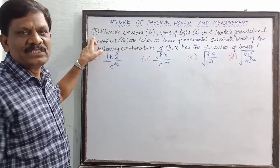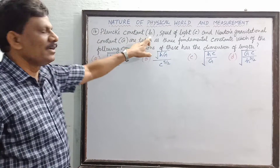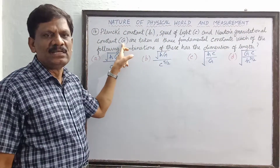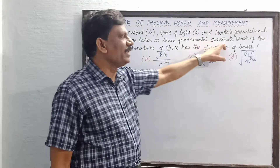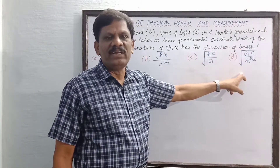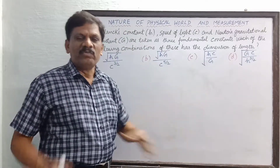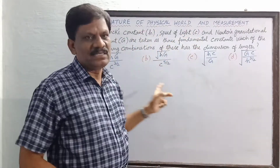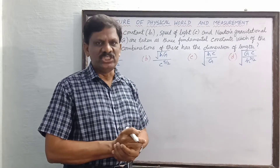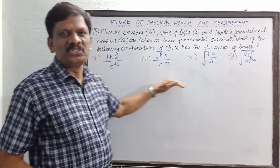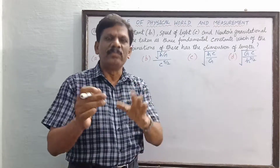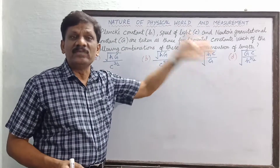Question number 14: Planck's constant H, speed of light C, and Newton's gravitational constant G are taken as three fundamental constants. Which of the following combinations of these has the dimensions of length? Four combinations are given. We are familiar with these three constants. This is a question from the NEET previous year paper. You cannot answer directly — you have to find out by substituting the dimensions in each option, which takes time.